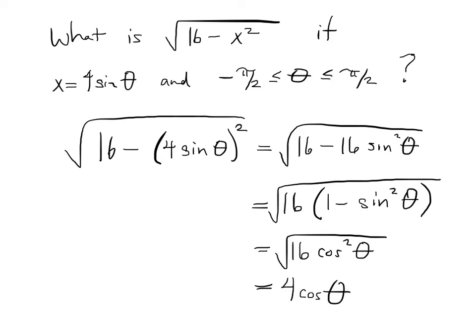Now, they make this specification that theta is between negative pi over 2 and pi over 2, which means that we are over here where cosine theta is positive. In other words, this is honestly 4 cosine theta and not negative 4 cosine theta. So it narrows it down. It makes it so that when we take the square root here naively, we're actually doing the correct thing, whereas we'd have to write negative 4 cosine theta if cosine theta was negative.